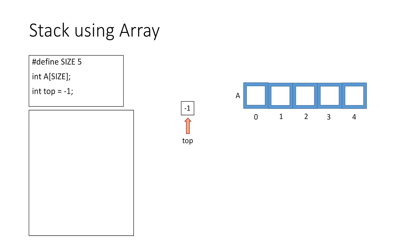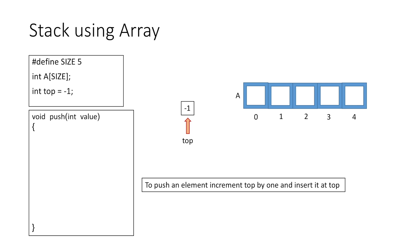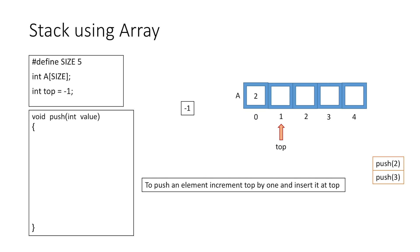Now let's see how we insert or push an element. The push function takes an integer argument — the element to be inserted. To insert, we simply increment top by 1 and insert the element at that position. If we push the first element, say 2, top increments to index 0 and we insert value 2 there. Similarly, pushing value 3 increments top by 1 and inserts 3 at that index.